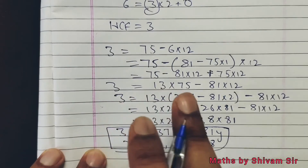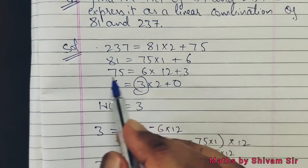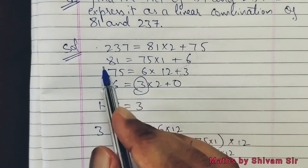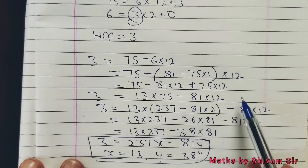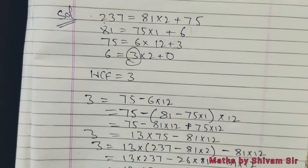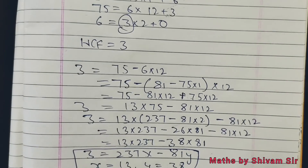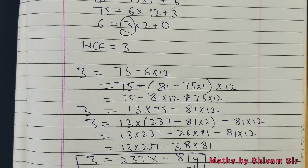So the final answer: we had to convert 3 into linear combination of 81 and 237. We started from 3 = 75 minus 6 times 12, then converted 6 = 81 minus 75 times 1, then 75 = 237 minus 81 times 2, and back-substituted step by step. This was our last category — HCF and LCM. I hope Euclid's division algorithm is clear to you all. For more practice, I'll give you extra questions — you can pause the video to solve them. Thank you all, see you in the next video, bye bye, take care.